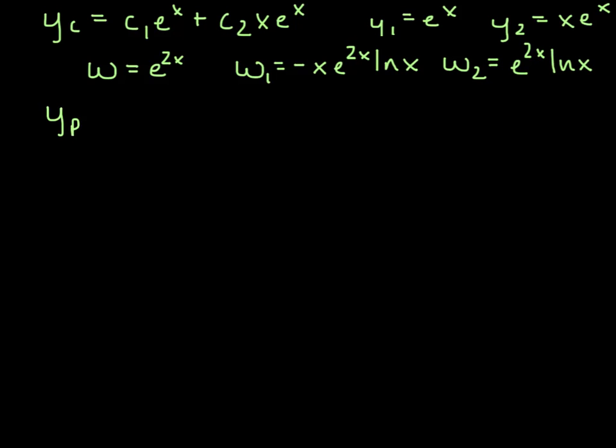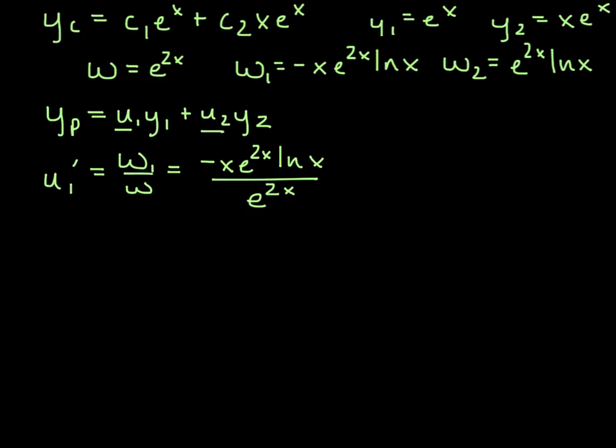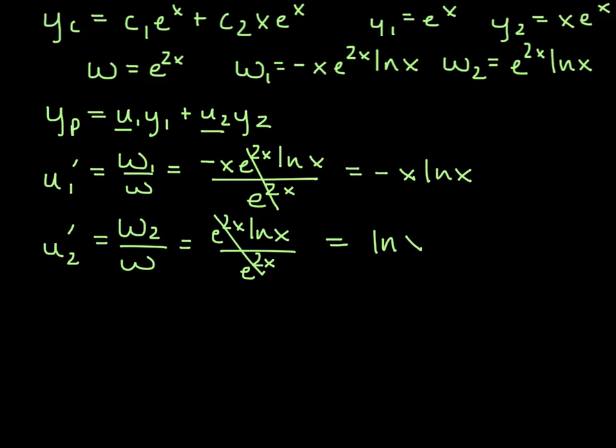So we'll continue. Remember, we're trying to find just our y sub p, our second part of our solution, which is u1 times y1 plus u2 times y2. So we need to start finding u1 and u2. Remember, u1 prime is going to equal w1 over w. So that will give us negative x e to the 2x ln x over e to the 2x. So that will reduce there, and we'll get negative x ln x for u prime 1. And then u2 prime, here we get w2 over w. And that gives us e to the 2x ln x over e to the 2x, reducing there just gives us ln of x for u prime 2.